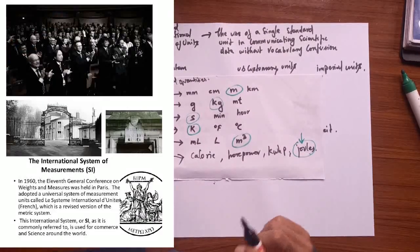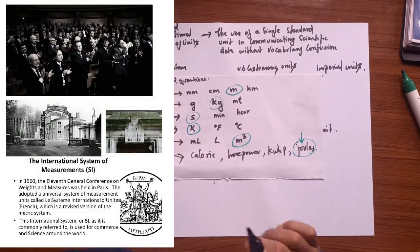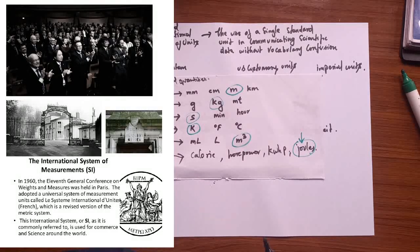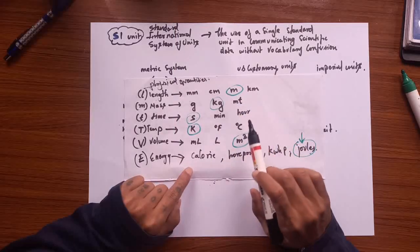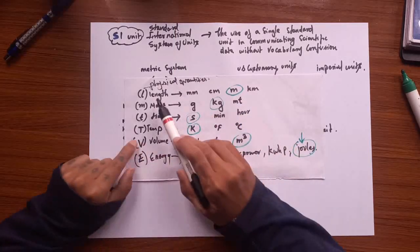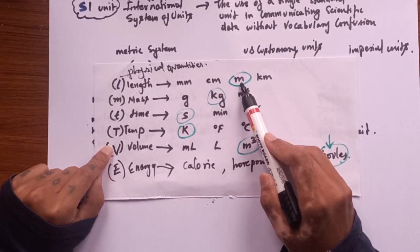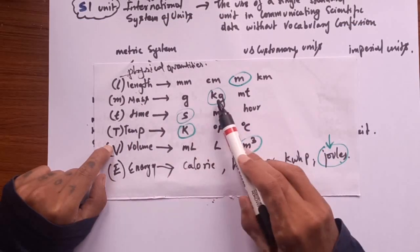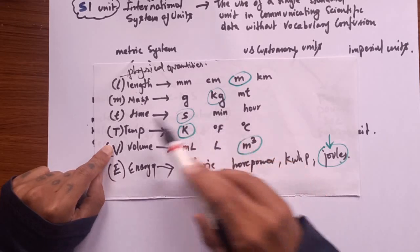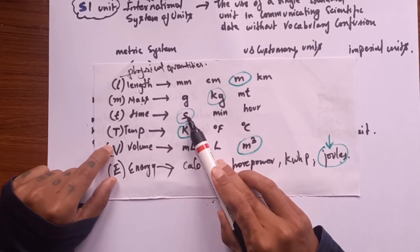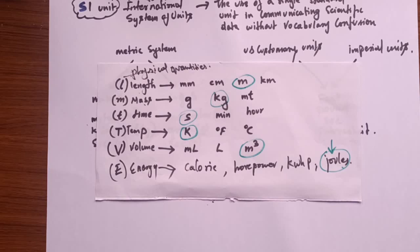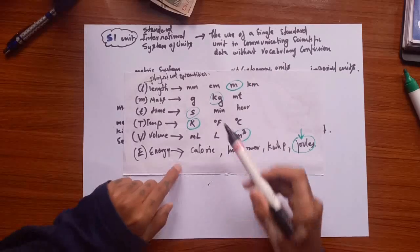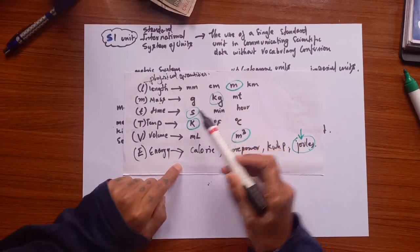In 1960, the scientific community held a general conference in France and all the scientists came in agreement, selecting one out of these units as the standard one to define the physical quantity. In the case of length, they selected the meter as the standard one. For mass, they selected kilogram as the standard one. In the case of time, they selected second. Temperature: Kelvin. Volume: meter cube. Energy: joules, and the list goes on for the other physical quantities.